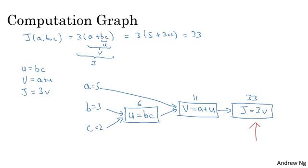And what we're seeing in this little example is that through a left to right pass, you can compute the value of j. And what we'll see in the next couple slides is that in order to compute derivatives, it will be a right to left pass like this, kind of going in the opposite direction as the blue arrows. That would be most natural for computing the derivatives.